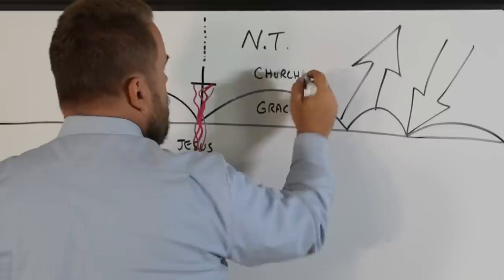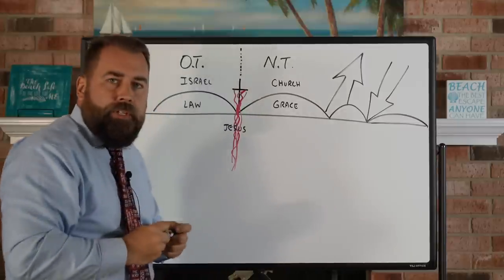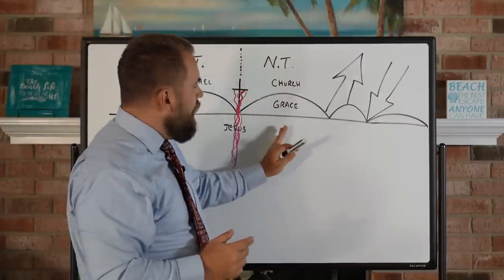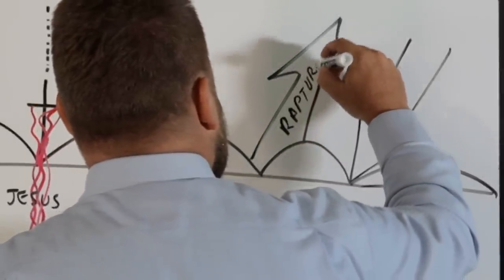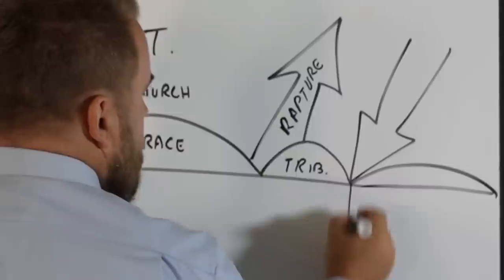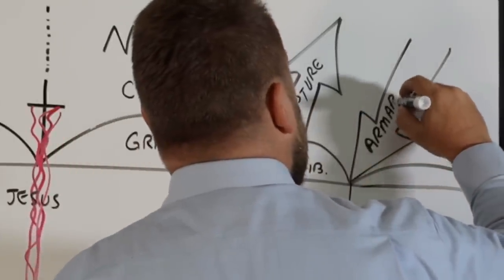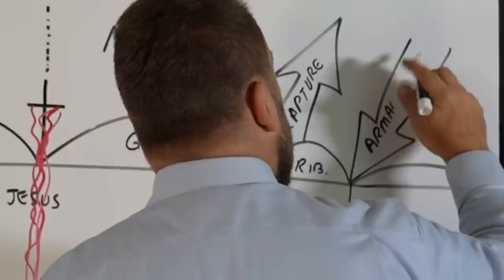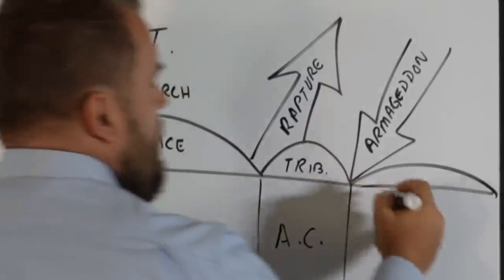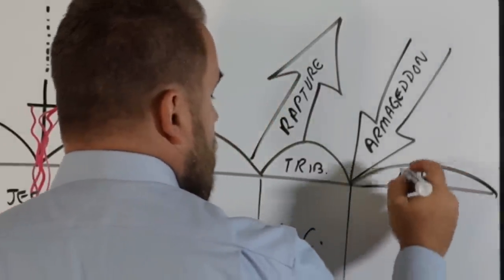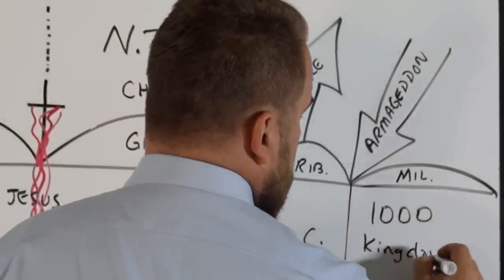After Jesus died, we see God changing from Israel to the church. There are even more divisions in the Bible — different times in which God deals with people. The Bible talks about when God takes the church out at the rapture, and after the rapture would be the time of Jacob's trouble, when God goes back to dealing with the nation of Israel. That's called the tribulation. We also see the time of the battle of Armageddon, in which God deals with the Antichrist. Then God reigns for a thousand years in His millennial kingdom.